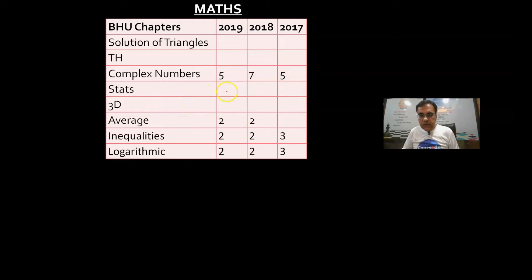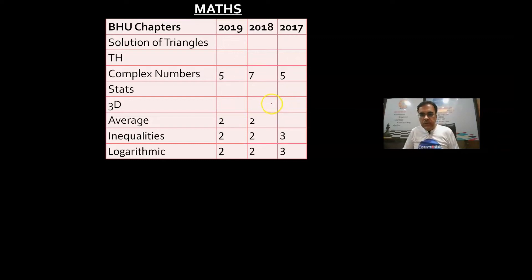No question, no question in the last years for 3D geometry, Vectors, Statistics, and Exponential/Logarithm. These are 4 to 5 chapters from which no questions came in the last three years. So when you start studying and planning your strategy, you can ignore these chapters.